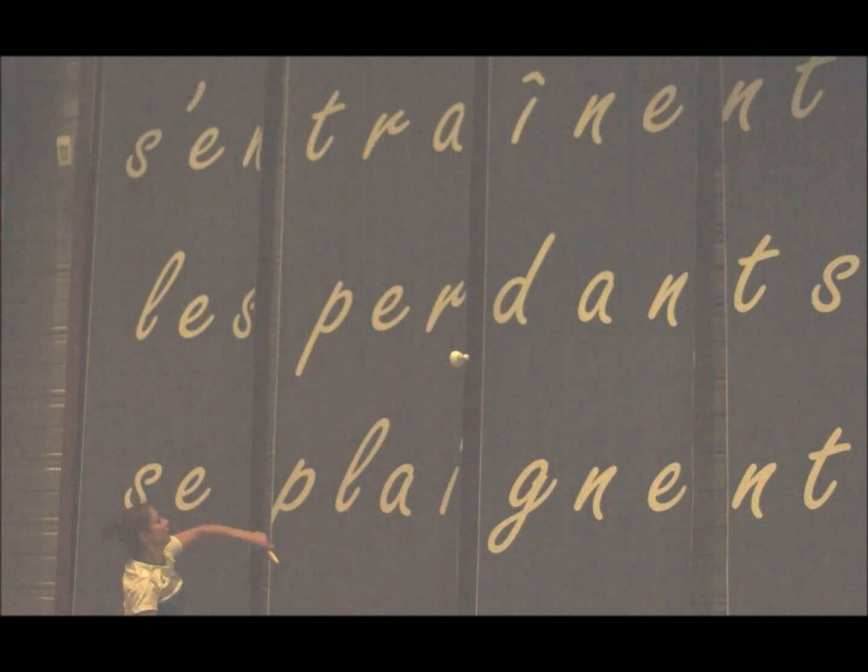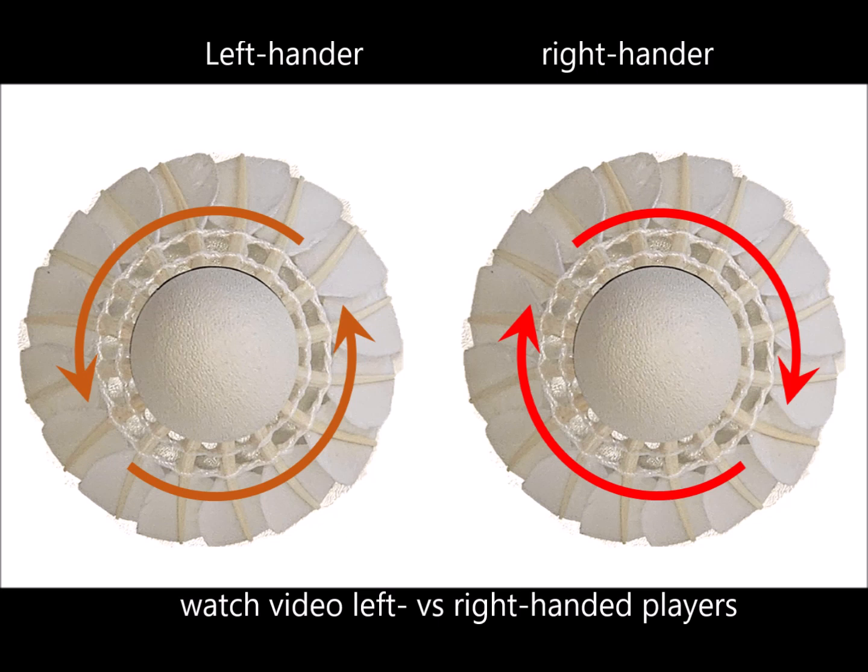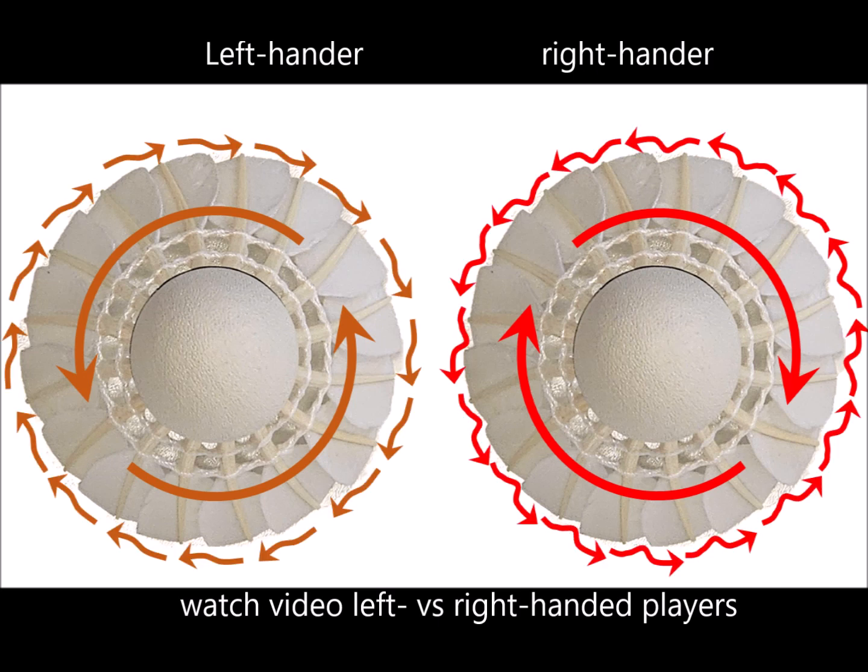As explained in another video, the shuttlecock spins in opposite directions for left and right-handers. Due to the orientation of the feathers, the friction with the air generates a stronger Magnus effect for right-handers.